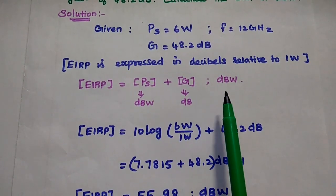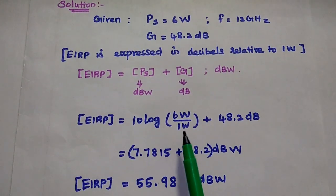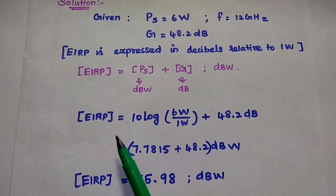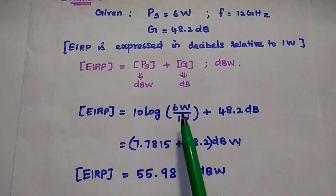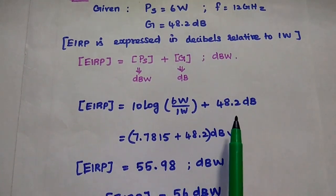EIRP is always expressed in decibels relative to 1 Watt. We have to compare with this 1 Watt. So EIRP is equal to 10 log (6W/1W) plus the gain value 48.2.